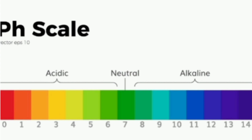A scale for measuring hydrogen ion concentration in a solution is called the pH scale. pH stands for power of hydrogen. The pH scale consists of 15 colours, ranging from 0 to 14. If the value of a solution is less than 7, it is considered acidic. If greater than 7, it is basic in nature. If exactly 7, it is considered neutral.